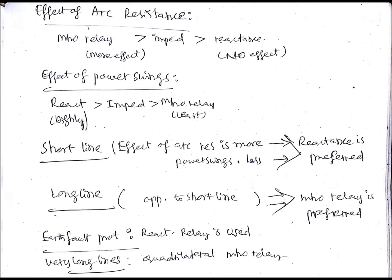The mho relay is going to get affected the most by arc resistance, then comes the impedance relay, and then comes the reactance relay. For the reactance relay there is no effect of arc resistance, which is very desirable. So the mho relay is affected most by arc resistance.